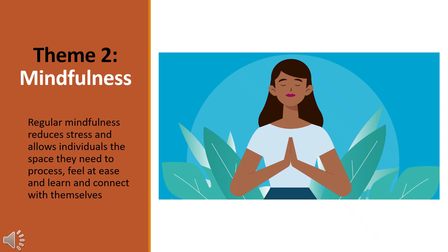The second theme focuses on mindfulness. Mindfulness activities help us to connect with ourselves so that we can connect with others, build relationships and develop good social skills. Young adults with a visual impairment can experience stress in relation to communication as they may find it more complex. Regular mindfulness reduces stress and allows individuals the space they need to process, feel at ease and learn. You can try a mindfulness exercise that has been included in the handout.